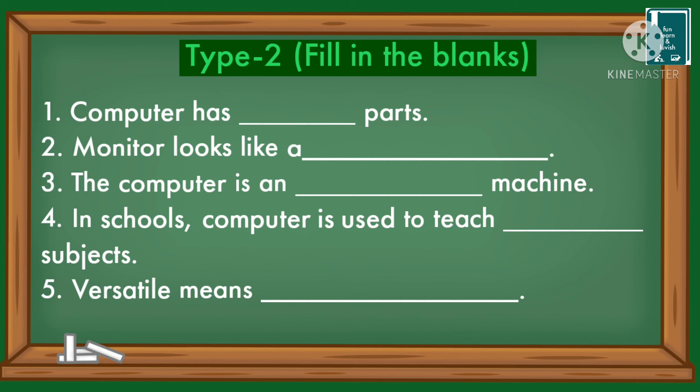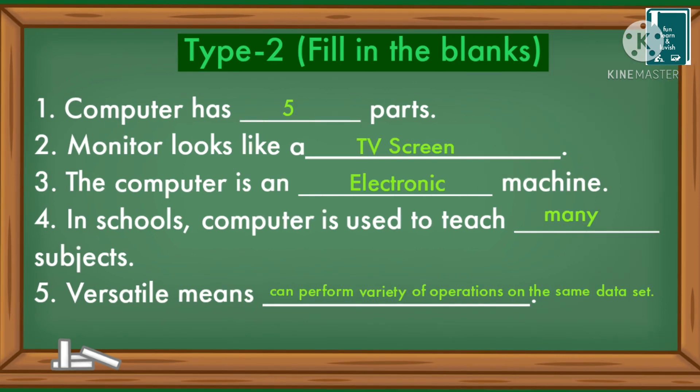Type 2 — Fill in the blanks: Computer has five parts. Monitor looks like a TV screen. The computer is an electronic machine. In schools, computer is used to teach many subjects. Versatile means which can perform a variety of operations on the same data set.